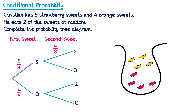Now let's look at the situation where we select a strawberry first but select an orange second. There are four orange and a total of eight, so the probability for orange is four over eight. Now let's switch over and look at the situation where the first sweet chosen was actually orange. If instead the first sweet chosen was orange, there are now only three orange sweets but there are still five strawberry sweets and eight sweets in total. So the probability of a strawberry now is five over eight, and the probability of an orange sweet on the second pick is three over eight. And this is your completed probability tree diagram.